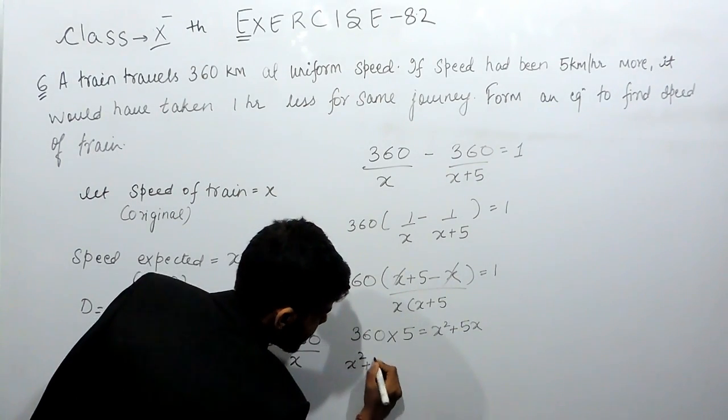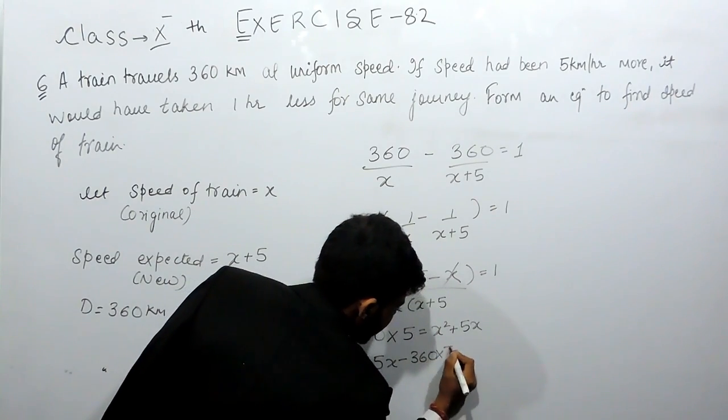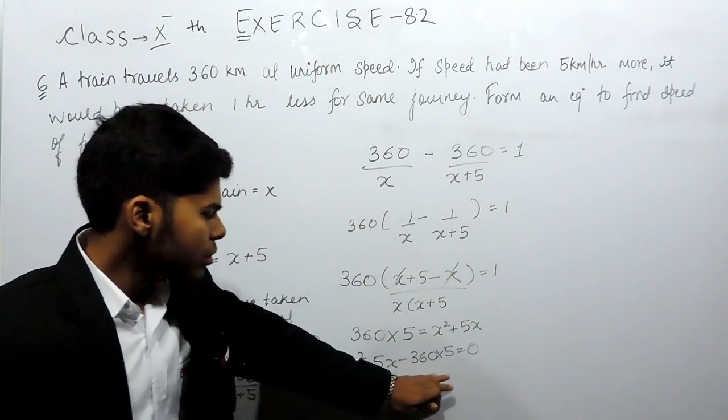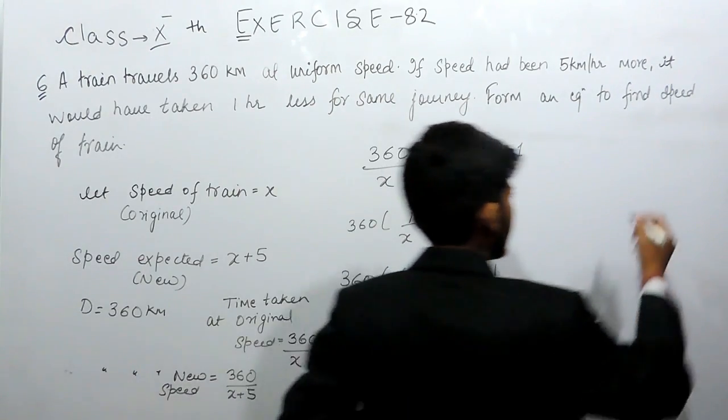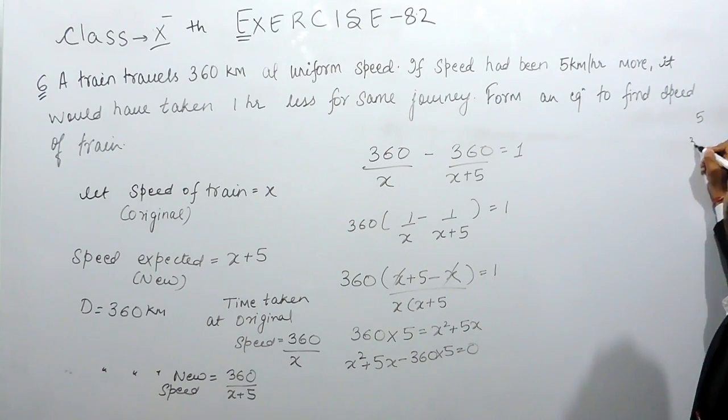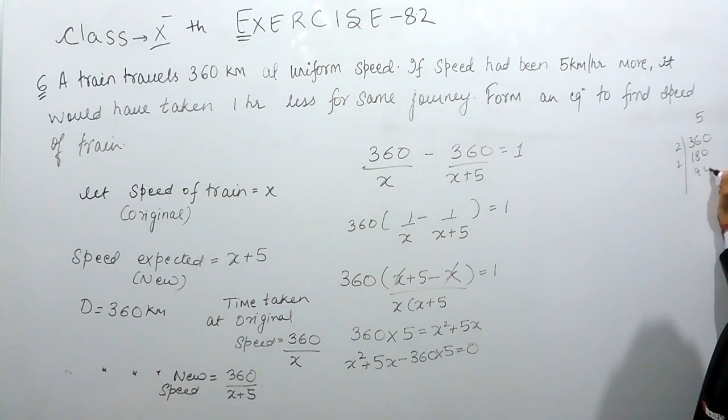This gets cancelled out, so 360 multiplied by 5 will be equals to x square plus 5x, or we can say that x square plus 5x minus 360 multiplied by 5 is equals to 0. Now we'll do the factorization of 360 into 5.